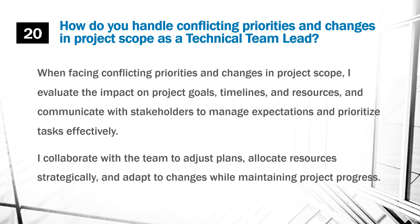How do you handle conflicting priorities and changes in project scope as a technical team lead? When facing conflicting priorities and changes in project scope, I evaluate the impact on project goals, timelines, and resources, and communicate with stakeholders to manage expectations and prioritize tasks effectively. I collaborate with the team to adjust plans, allocate resources strategically, and adapt to changes while maintaining project progress.